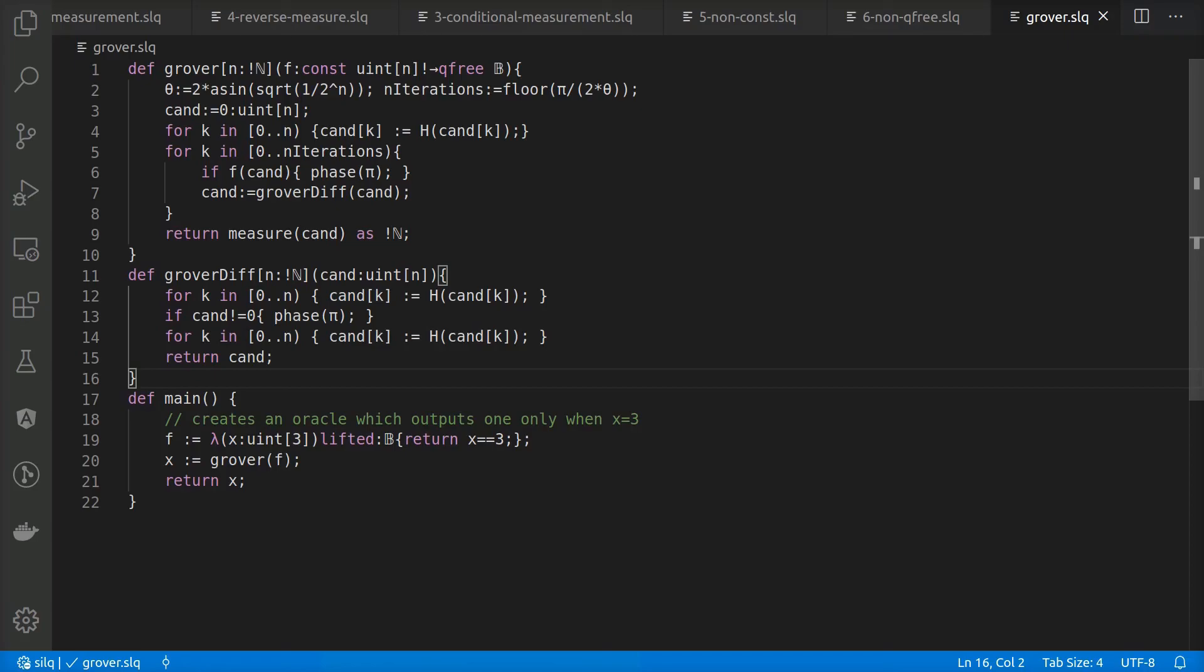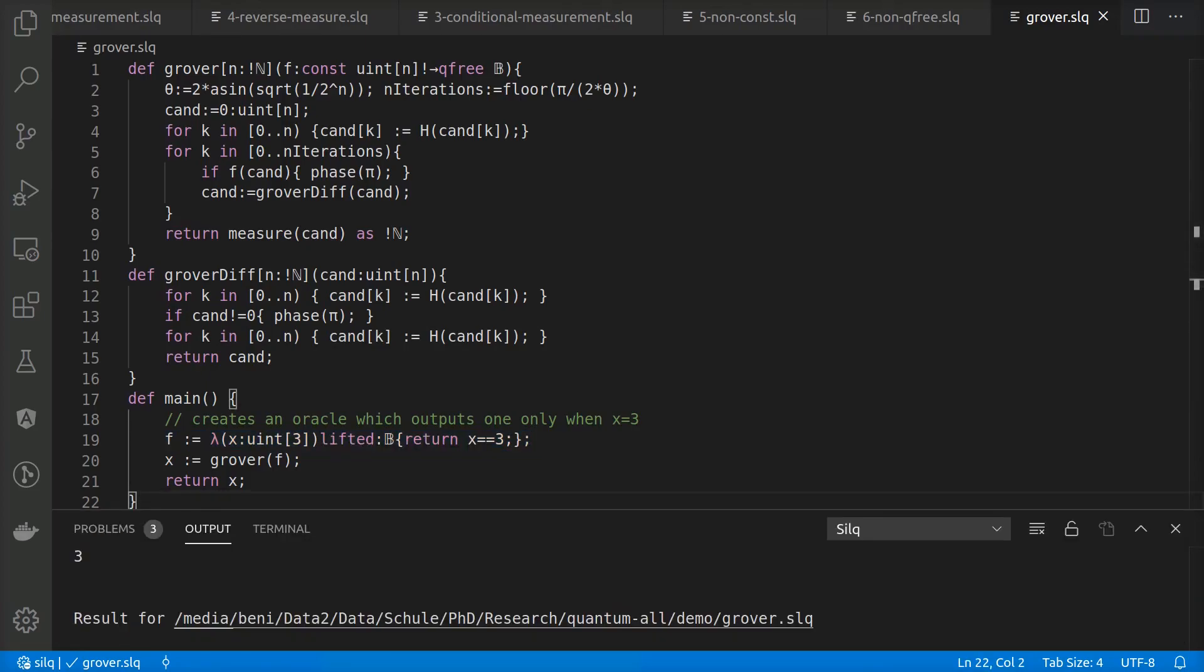To conclude, we quickly want to demonstrate Zilk's simulator. In this example, we run our Zilk implementation of Grover's algorithm on a simple oracle function whose only solution is 3. As you can see, our simulator indeed finds this solution.